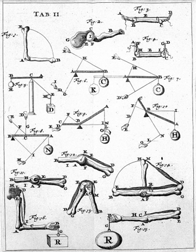Biomechanics is widely used in the orthopedic industry to design orthopedic implants for human joints, dental parts, external fixations and other medical purposes. Biotribology is a very important part of it — it is a study of the performance and function of biomaterials used for orthopedic implants, playing a vital role to improve the design and produce successful biomaterials for medical and clinical purposes. One such example is in tissue-engineered cartilage.